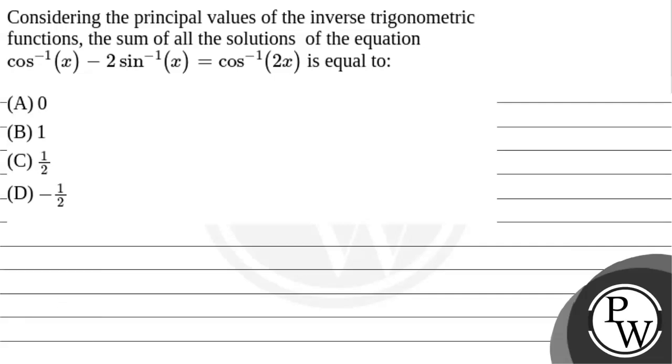Hello, let's read this question. Considering the principal values of the inverse trigonometric functions, the sum of all the solutions of the equation cos⁻¹(x) - 2sin⁻¹(x) = cos⁻¹(2x) is equal to: (A) 0, (B) 1, (C) 1/2, or (D) -1/2.